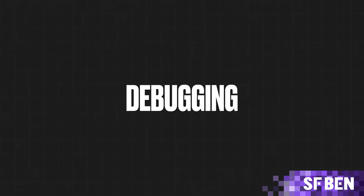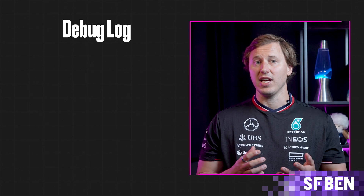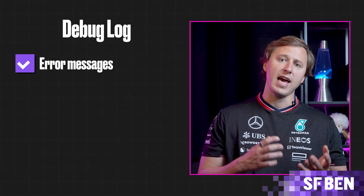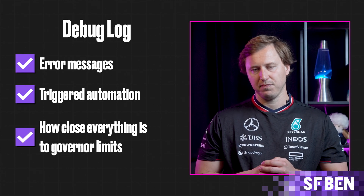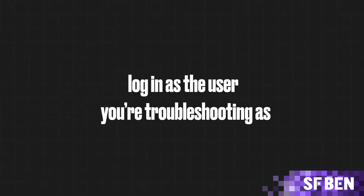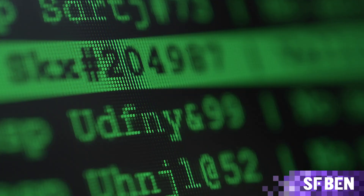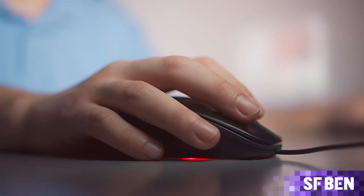One of the powerful features of the Developer Console is the debugging capabilities. Debugging is the action of finding runtime errors in the system. A debug log is a log of what's happening in the system, including error messages, automations that are being triggered, and how close everything is to governor limits. One of the standout benefits of the Developer Console is that it automatically starts capturing debug logs as soon as you open it — no need to manually set up or worry about expiring mid-investigation.